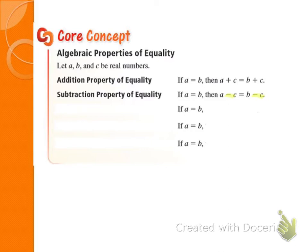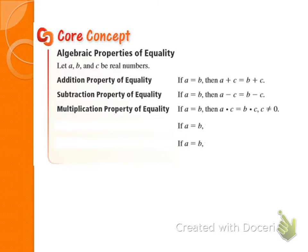What's the next property of equality? Multiplication property of equality. This one says if you multiply the same number on both sides, you still have an equal equation — times C on both sides. Notice that C cannot equal zero, because multiplying both sides by zero would make zero equal zero, which is nonsense — you would no longer have an equation.